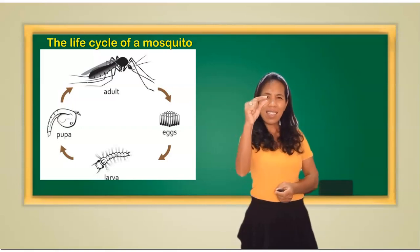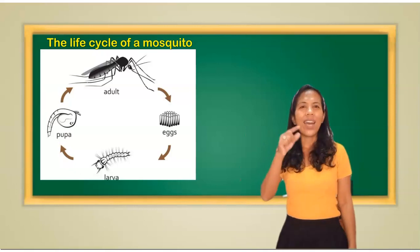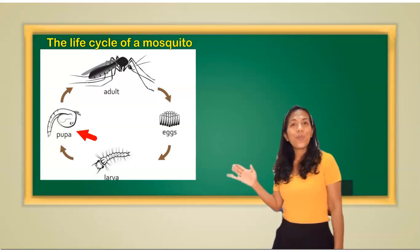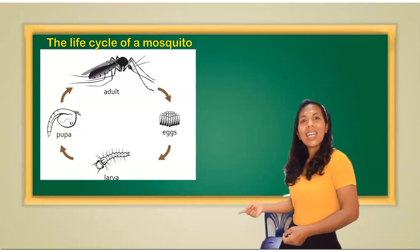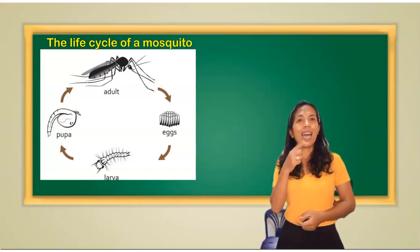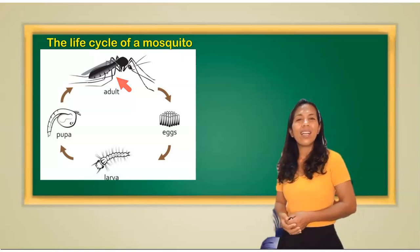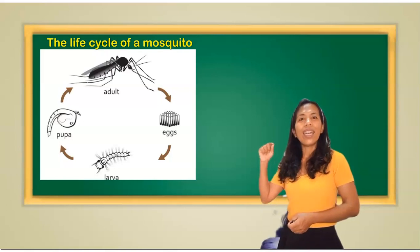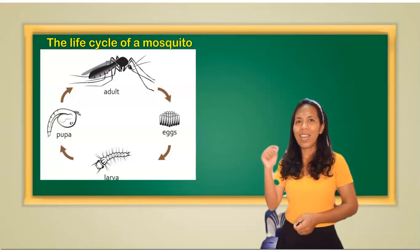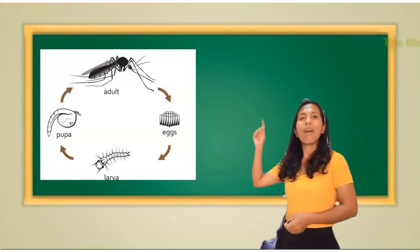A larva is tiny — it's very small. A larva will turn into a pupa, and it will continue growing and develop into a mosquito. So again, the life cycle of a mosquito is: egg, larva or larvae, pupa, and then mosquito.